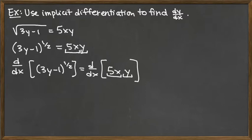When we take the derivative with respect to x on the left hand side, we're going to be using the chain rule. We bring down the power 1/2 and we take exactly what's in the parentheses — 3y minus 1 — and we drop the power by 1. So we have the power 1/2 minus 1, which gives us negative 1/2.